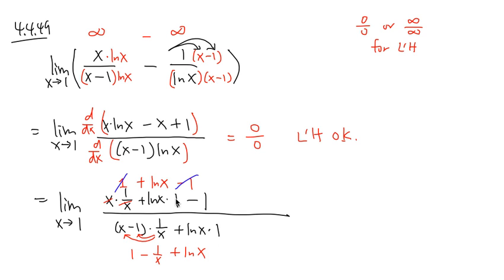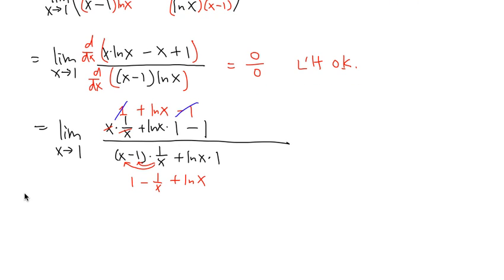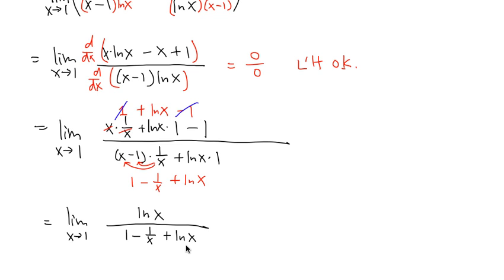So we now have the limit when x is approaching 1 of ln x over (1 minus 1 over x plus ln x). Plugging in 1: the numerator gives ln 1, which is 0. On the bottom, 1 minus 1 is 0, plus ln 1 is also 0. So this is again a 0 over 0 situation, and we have to use L'Hôpital's rule again.